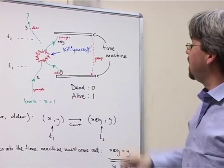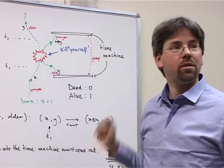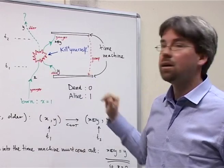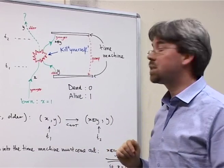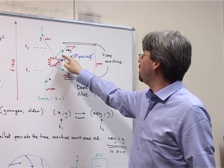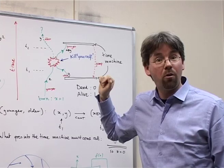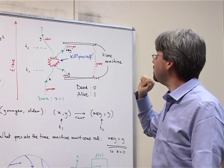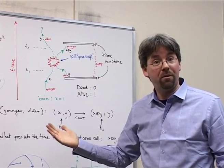And so now we have the situation where I'm going into the time machine, pop out earlier, and encounter my younger self. I killed myself. And that means that that person cannot go into the time machine anymore. And so we have the paradox again.